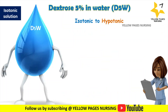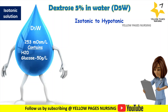The next isotonic solution is Dextrose 5% in Water (D5W). Its osmolality is 252 milli-osmol per liter. It contains water and glucose at 50 grams per liter. When D5W is used, it is initially isotonic and provides free water, but when the dextrose is metabolized, the solution becomes hypotonic.